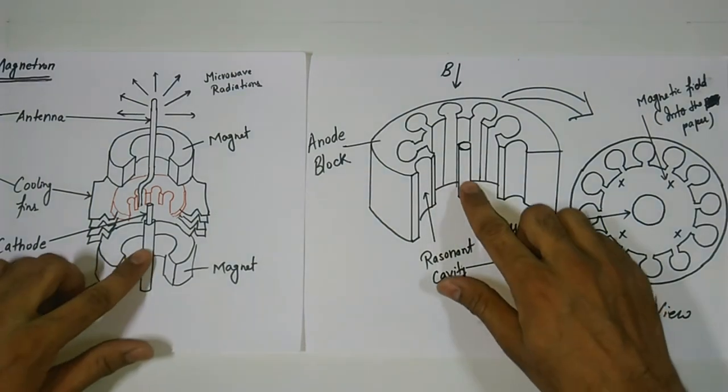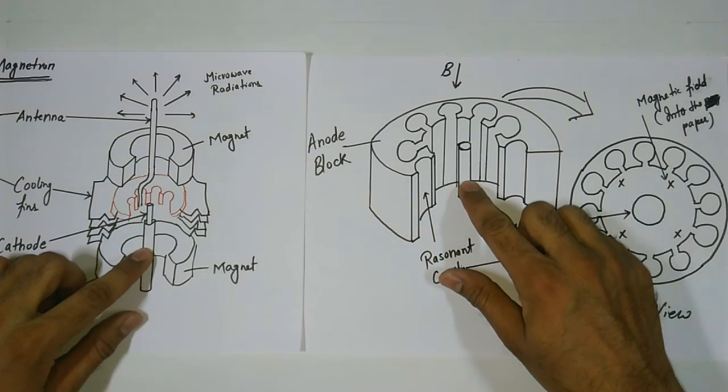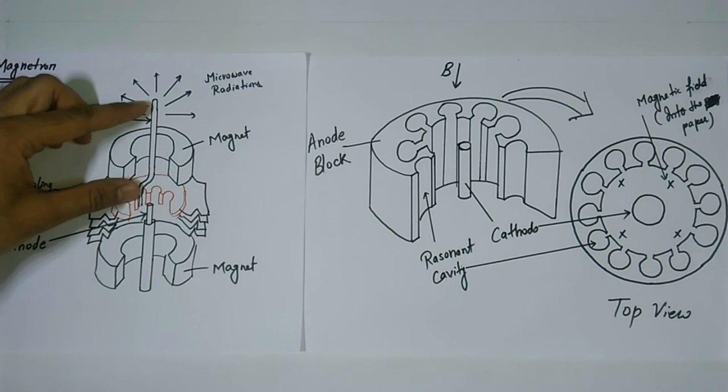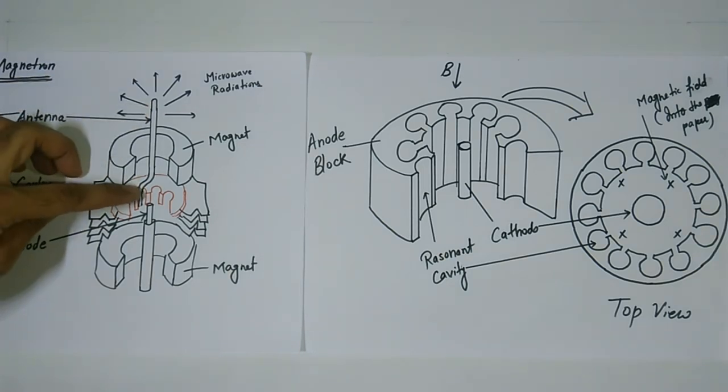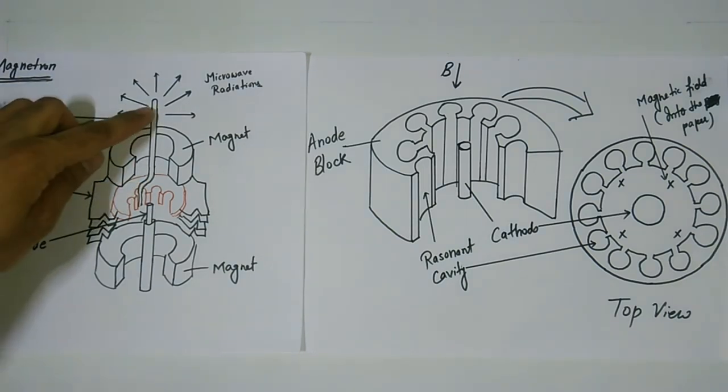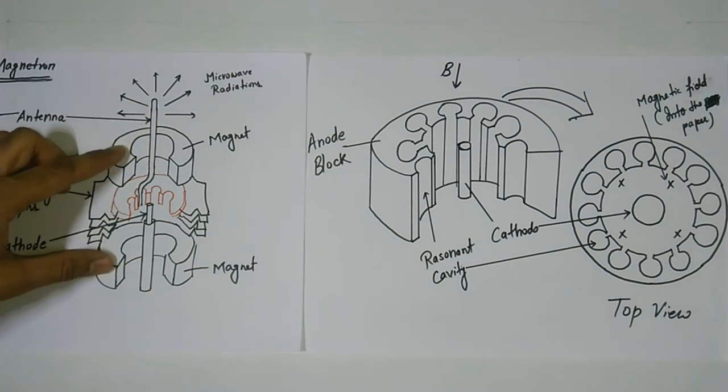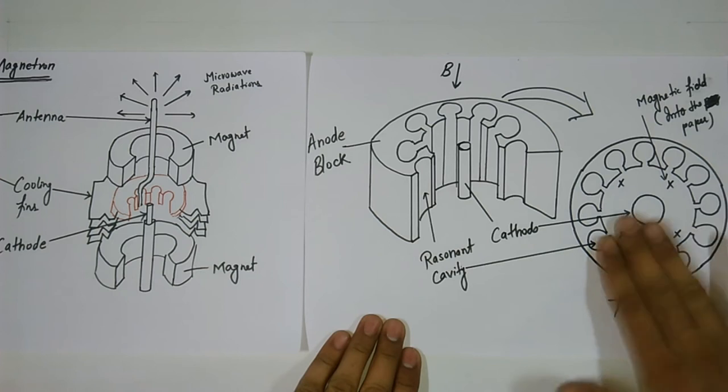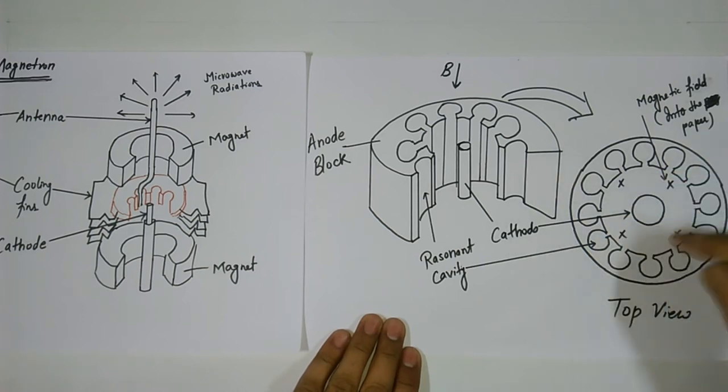The cathode is at the center of the anode and it is constructed of a highly emissive material. The antenna is positioned so that its one end goes into the resonant cavity and the other end transfers the microwaves to the cooking chamber. These two permanent magnets provide a constant magnetic field which is perpendicular to the plane of the anode block.